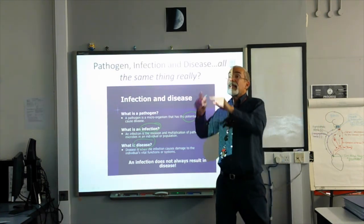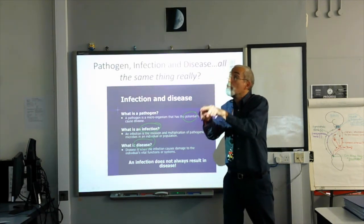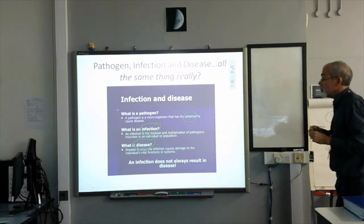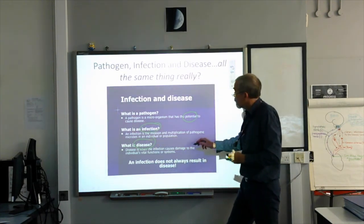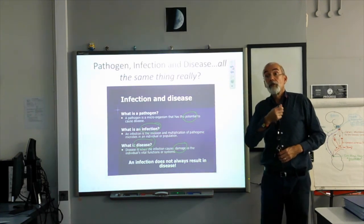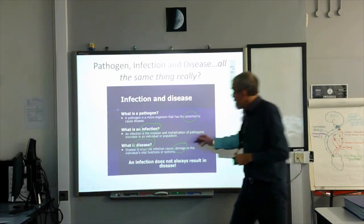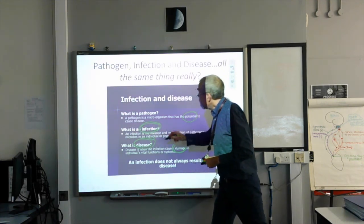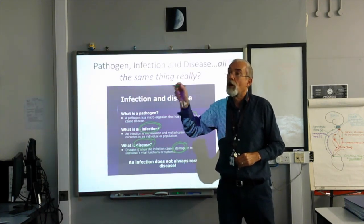That little collection of microorganisms — pathogens — are starting to divide, but at the moment they are not causing us a massive amount of harm. It is only when the pathogens reach sufficient numbers where they start to damage our cells that we start to get the symptoms of a disease. When they damage us, we get disease. When they infect us, we do not yet show any symptoms of disease.